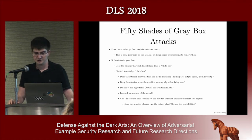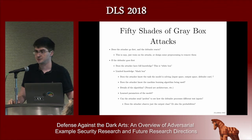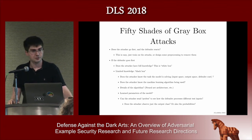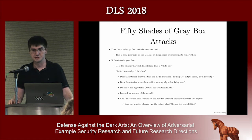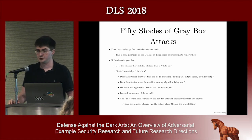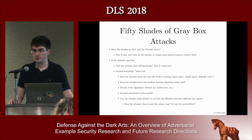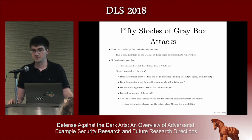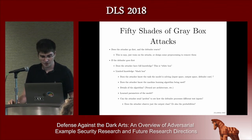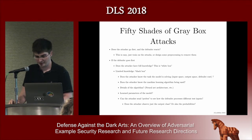I like to joke that this is the 50 shades of gray box attacks against machine learning algorithms. Some variants include where the attacker sends inputs and observes outputs but doesn't know the parameters. In other variants, the attacker might know the architecture but not the parameters, or might not even know whether it's a neural network, a support vector machine, or a decision tree. All of these different models should be specified clearly when describing the claim that motivates a defense.